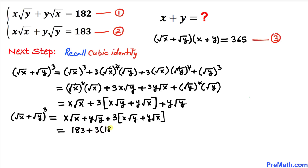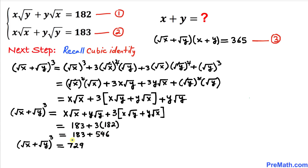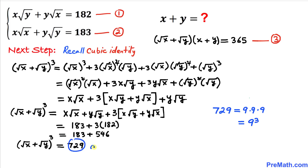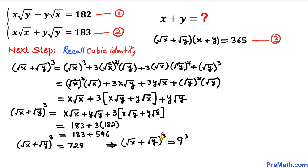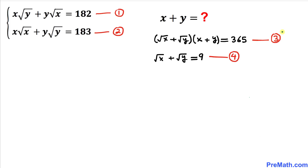This gives us 183 plus 3 times 182, which simplifies to 729. Now 729 equals 9 times 9 times 9, which is 9³. So (√x + √y)³ = 9³. Since the exponents are the same, we equate the bases: √x + √y = 9. We call this equation 4.